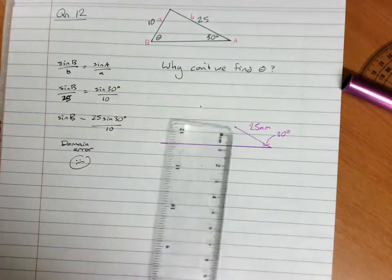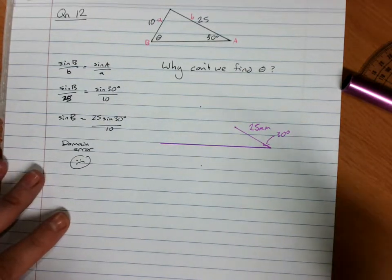Now, so we can start by saying the triangle doesn't exist.